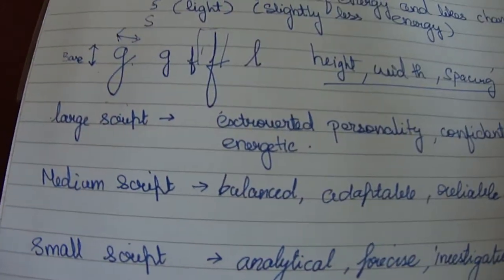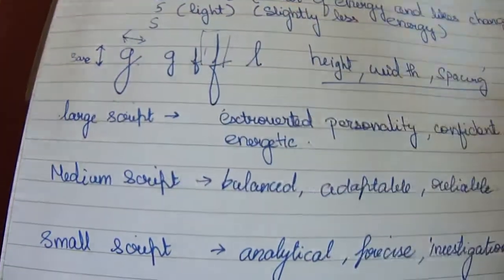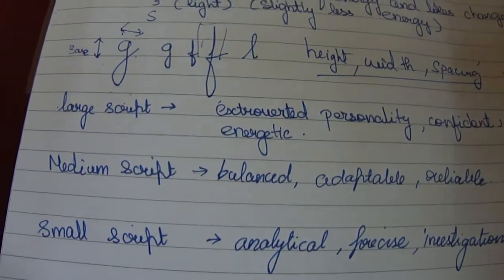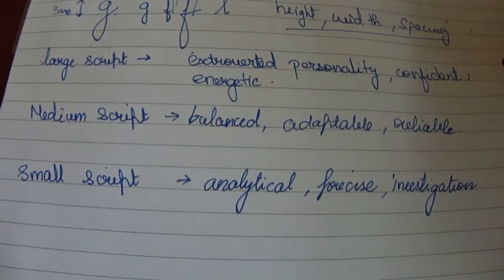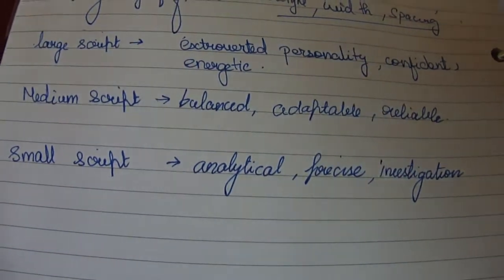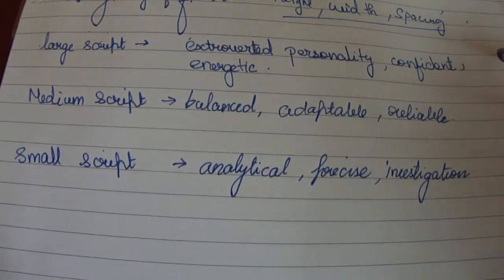If it is on the medium side, a medium script, then it would mean that the person is more balanced, more adaptable, and more reliable. If the script is on the smaller side, the person is likely to be more introverted and will be analytical, precise, and more into investigation.